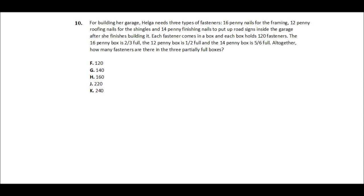For building her garage, Helga needs three types of fasteners: 16-penny nails for the framing, 12-penny roofing nails for the shingles, and 14-penny finishing nails to put up road signs inside the garage. Each fastener comes in a box, and each box holds 120 fasteners.